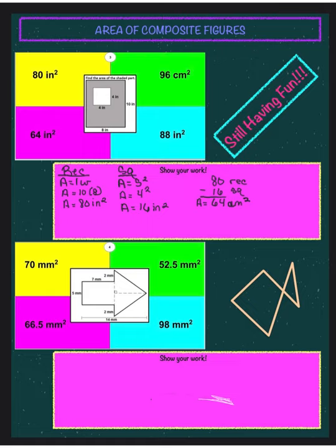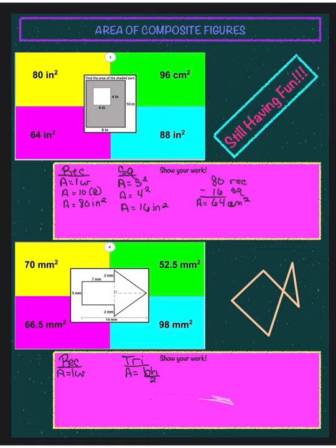The next problem has a rectangle and a triangle. I'll write the formula for the rectangle — area equals length times width — and for the triangle — area equals base times height divided by 2. To find the area of the rectangle, I multiply 7 and 5. When I multiply 7 times 5, I get 35. So the area of the rectangle is 35 millimeters squared.